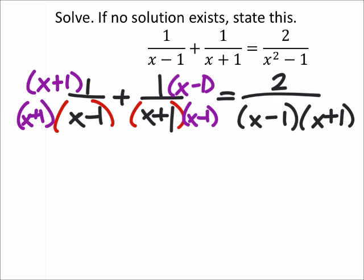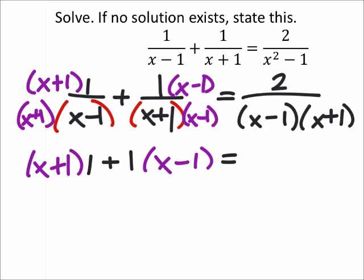Now, the way that I have this written, we have three terms, all with three common denominators, which means that we can rewrite this problem now without any denominators. So I got x plus 1 times 1 plus 1 times x minus 1, and this now equals 2.